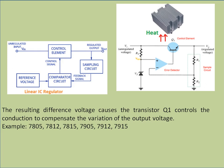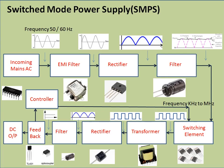Some examples of linear IC regulators are the 7805 (positive 5V) and the 7905 (negative 5V).